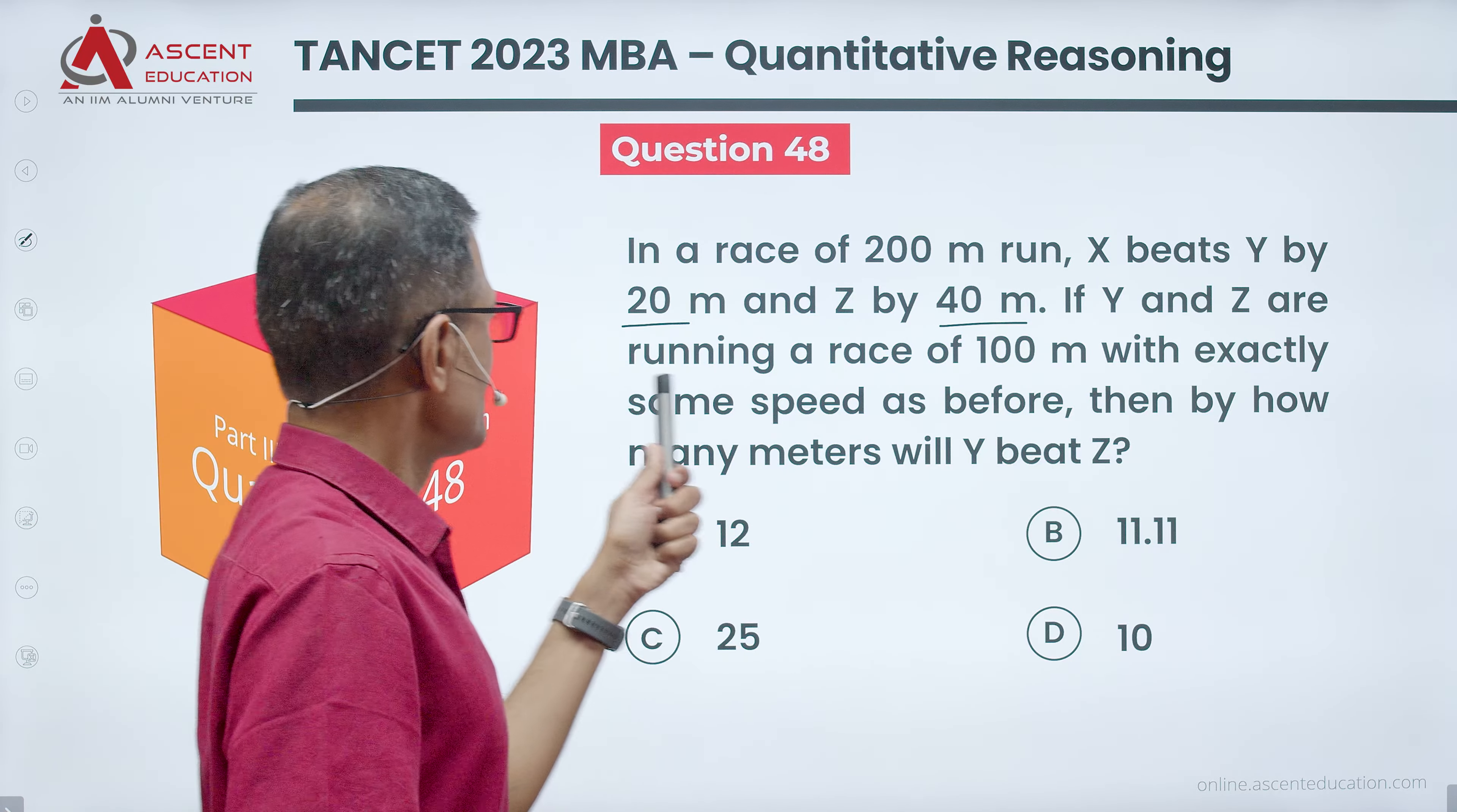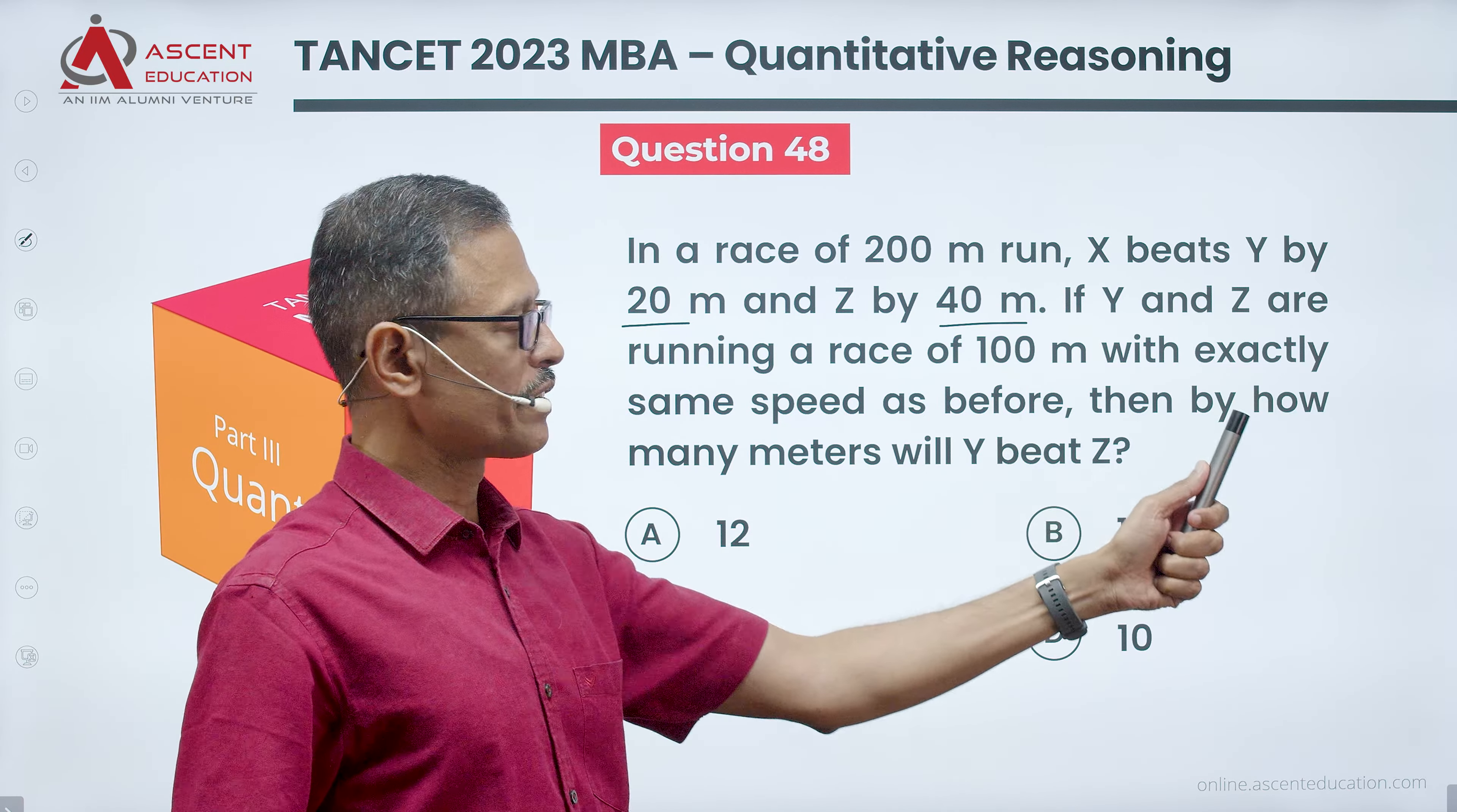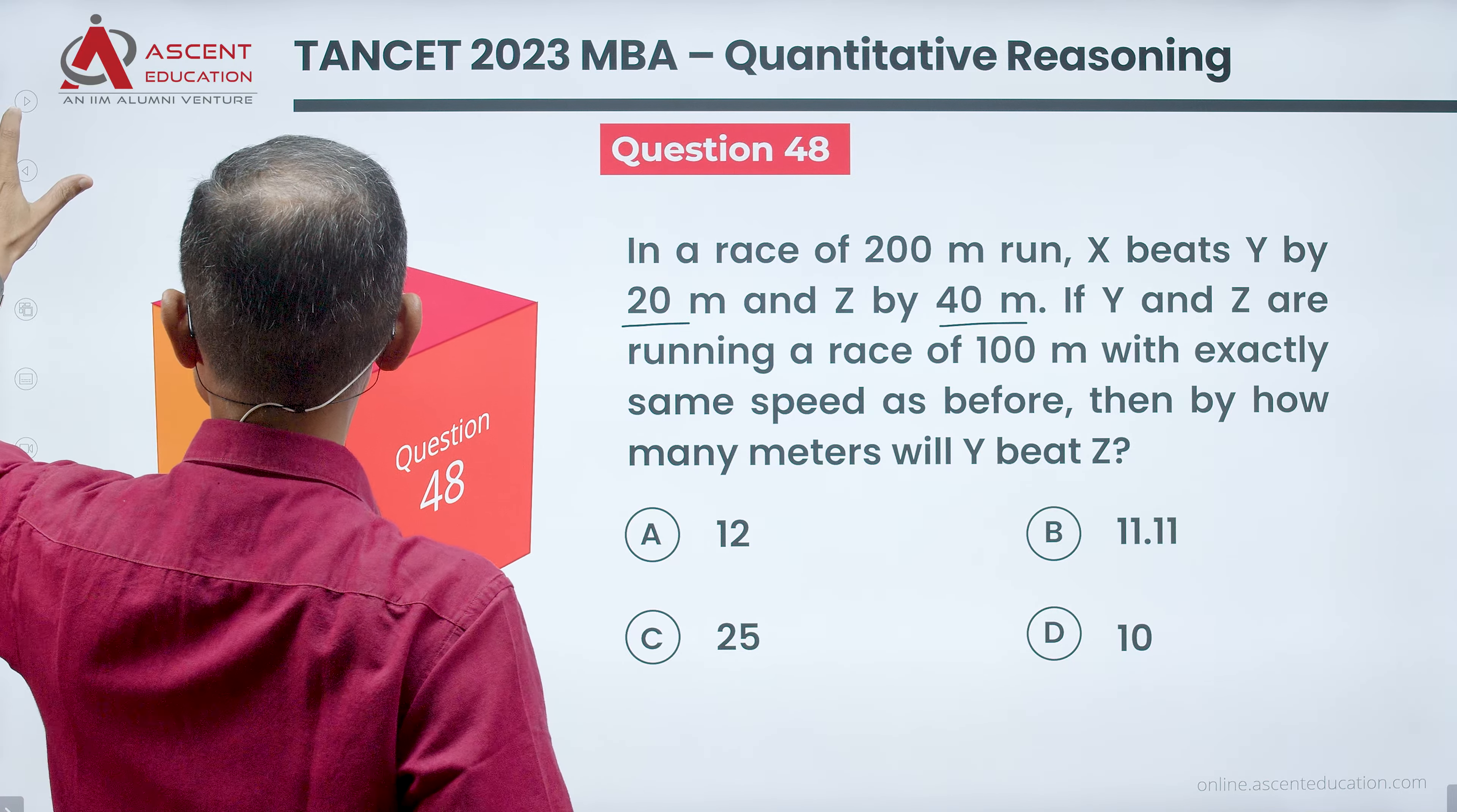If Y and Z are running a race of 100 meters with exactly the same speed as before, then by how many meters will Y beat Z? This is what the question is asking.